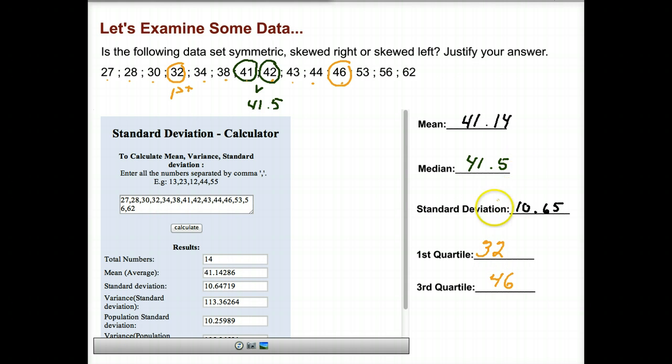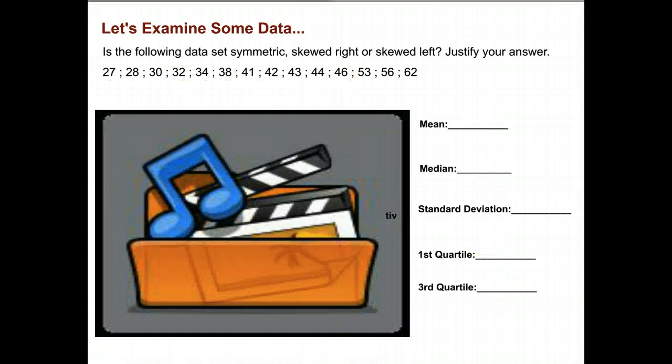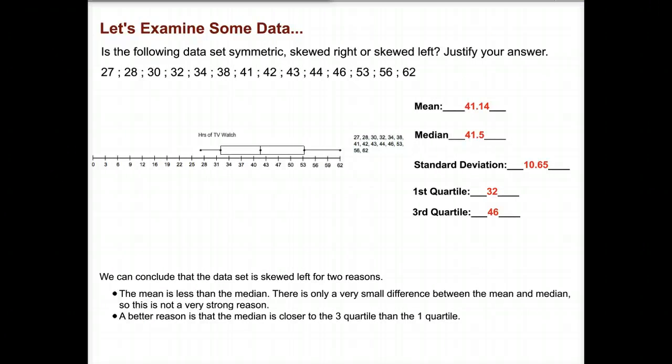So now we can analyze and we can determine whether or not our data is symmetric, skewed right, or left. And I'm prepared to justify my answer. So think about that for a second. Compare the mean to the median. Then also look at the median as compared to the first and third quartile. Which one is it closer to?